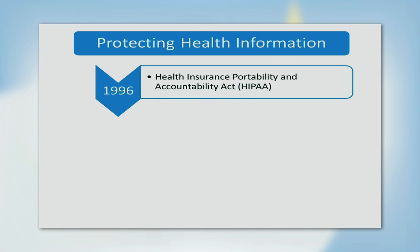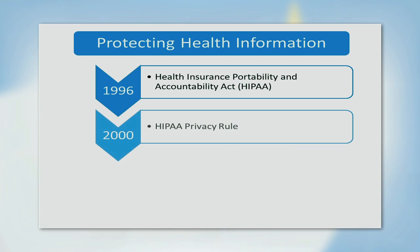As we have seen, the administrative simplification provisions attached to the HIPAA law in 1996 were the first attempt at outlining guidelines for protecting health information. In 2000, the privacy rule was established, which further described what needed to be done. At first, HIPAA was seen as a huge burden, but over time, healthcare professionals and patients have become more comfortable with the rules.